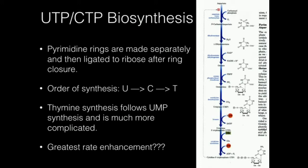You might also see orotidylate decarboxylase listed as OMP decarboxylase. In any case, that gives us UMP, or uridylate. UMP can be phosphorylated twice by two kinases to make UTP. UTP can then react with cytidylate synthetase, and that gives us CTP. So UTP is converted directly by one enzyme to CTP — that's the synthesis of two of our pyrimidines.